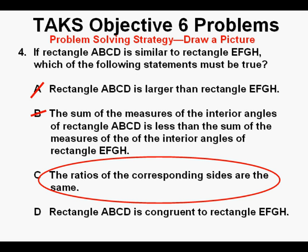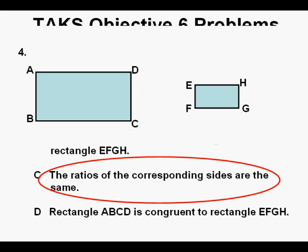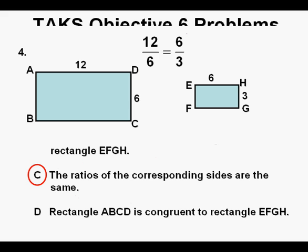Let's take a look at answer C. The ratios of the corresponding sides are the same. And here are our two rectangles again, rectangle ABCD and rectangle EFGH. And if we look at them carefully, or even if unsure, take the time to measure their dimensions, we see that 12 over 6 is the same as 6 over 3. And that's the very definition of similarity, that the ratios of the dimensions are the same. So we circle C as our correct answer.